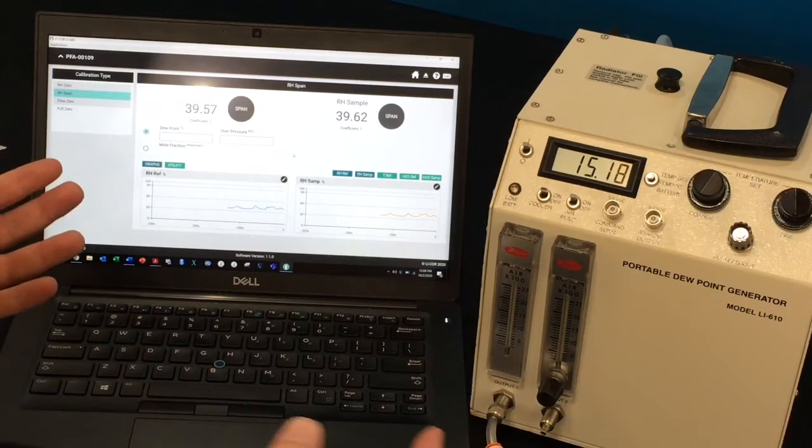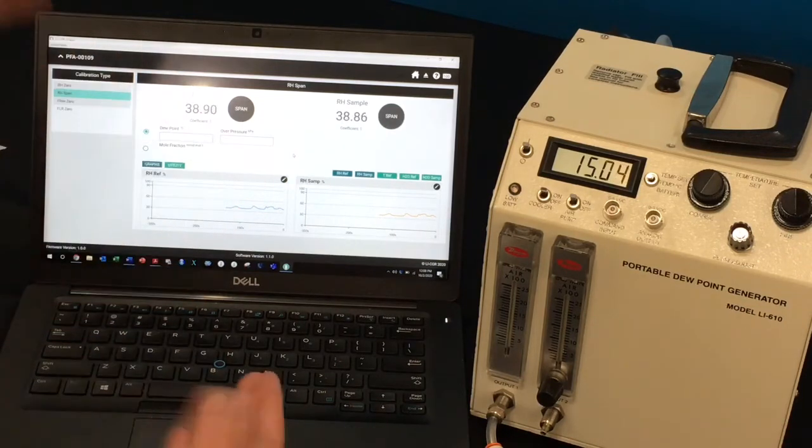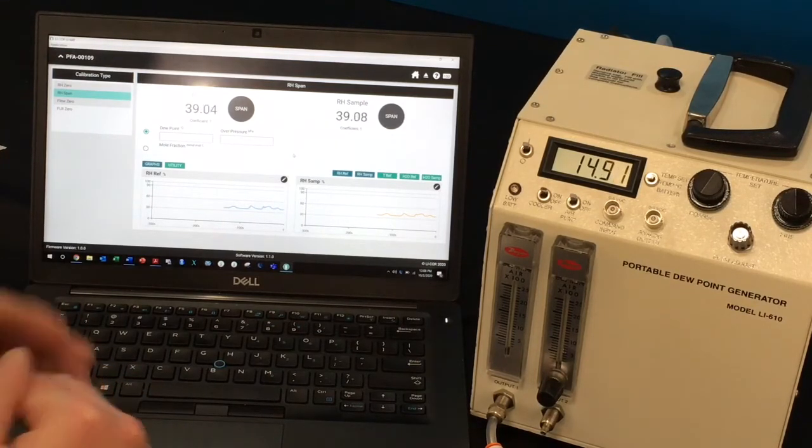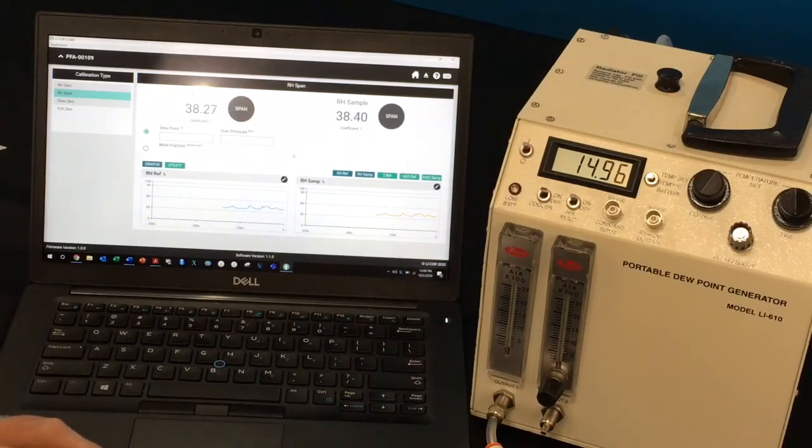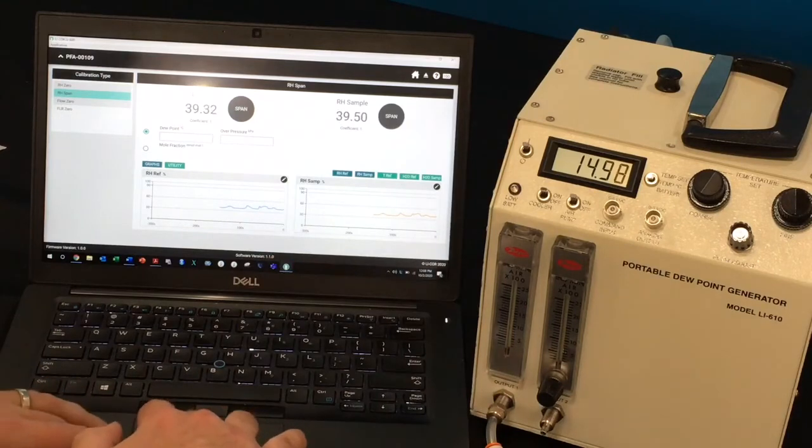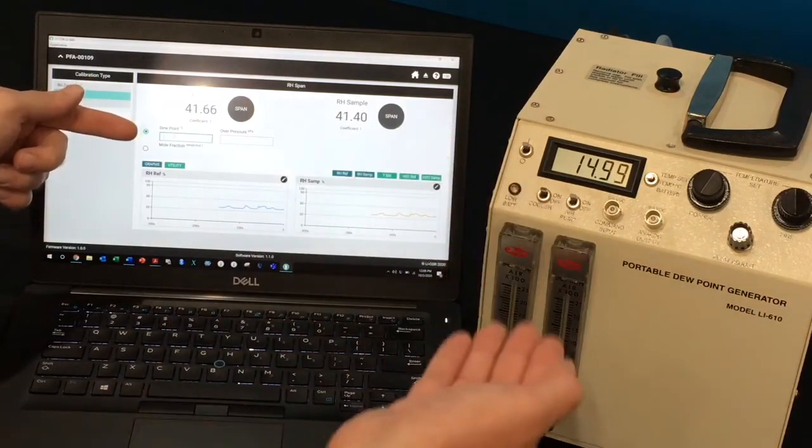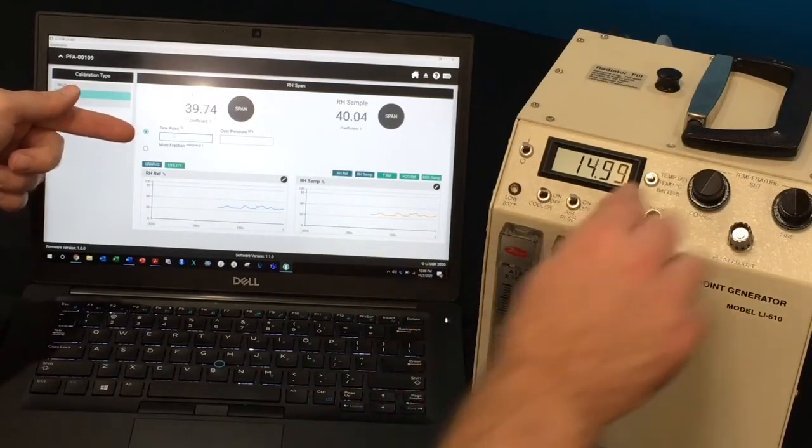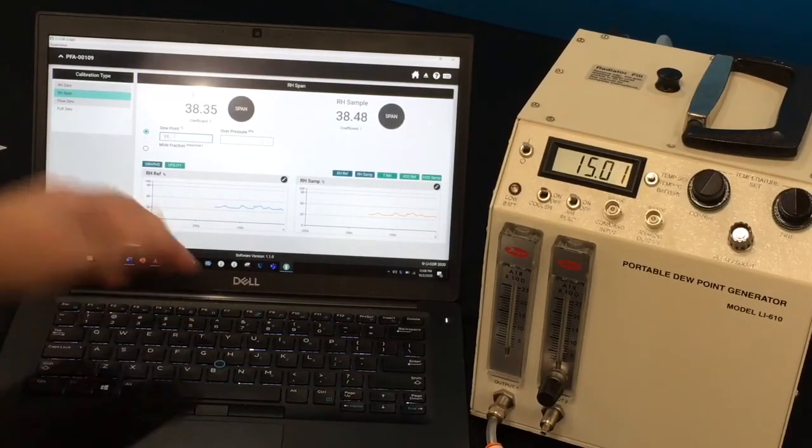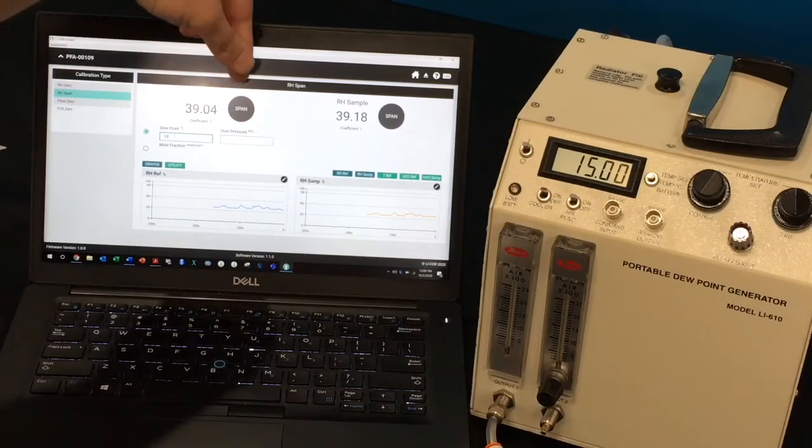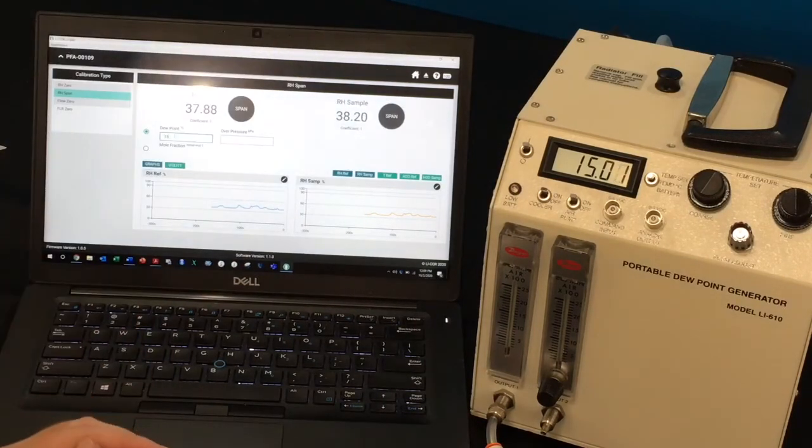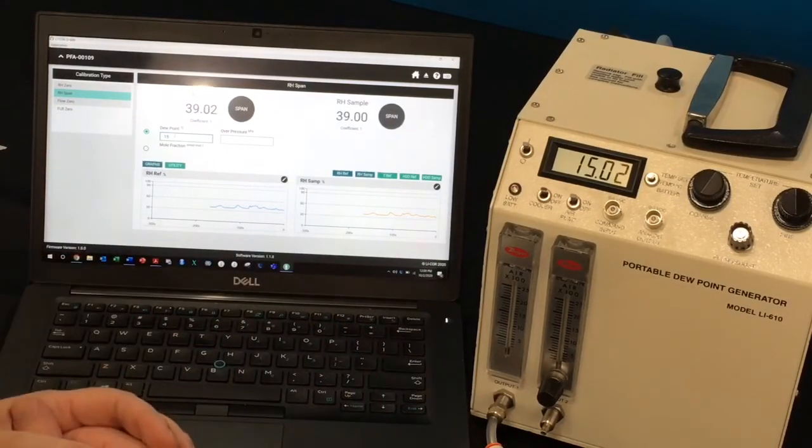After letting this run for about 30 minutes, I would recommend changing the scale on the graphs to a more finer resolution. That way you can truly see when the relative humidity readings actually reach stability. Once they have reached an asymptote and leveled off, you can enter the dew point that you've set on the LI-610 itself. In my case, just about 15 degrees. So I would type in 15 and then click on the span button for each relative humidity sensor to set those relative humidities to read correctly.